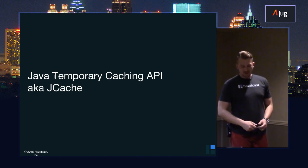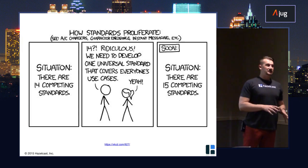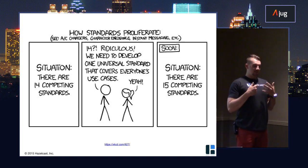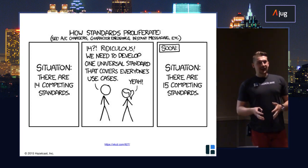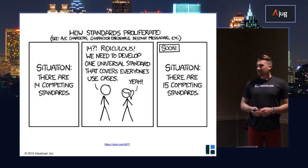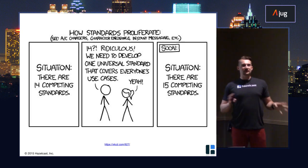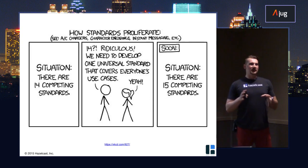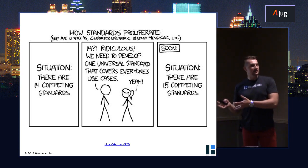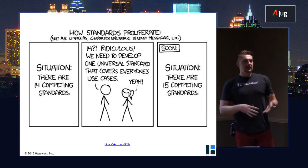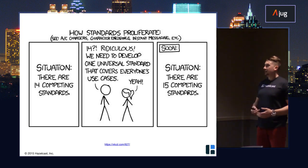So let's talk JCache. I really like this comic - it's very suitable because the standard that was finally finalized in March 2014 was actually like ten years in development. And it solved one of the problems: we have multiple implementations of different caches. We have in-process caches like EHCache or Guava or Apache. Or we have distributed systems like Coherence, Hazelcast, and many others. So let's put some standard API in place.